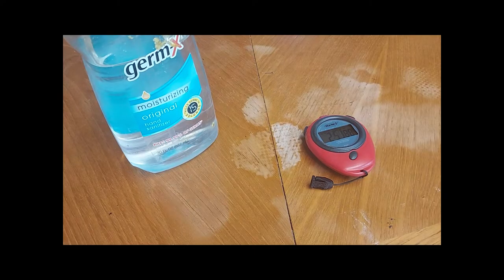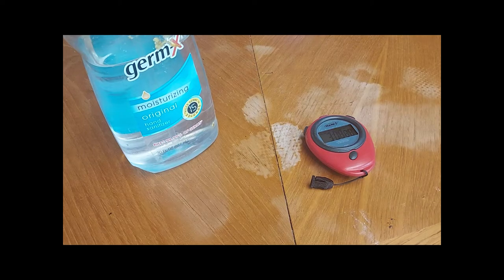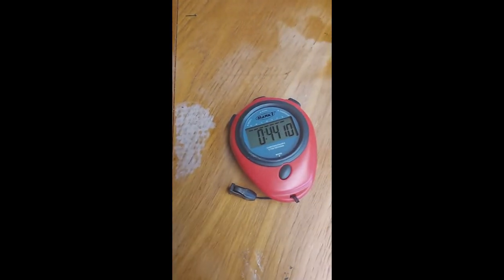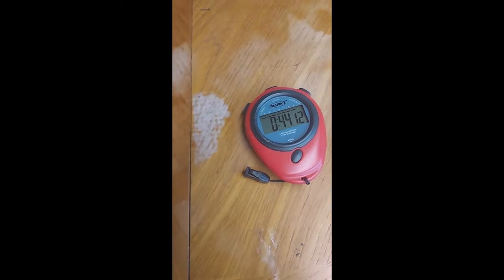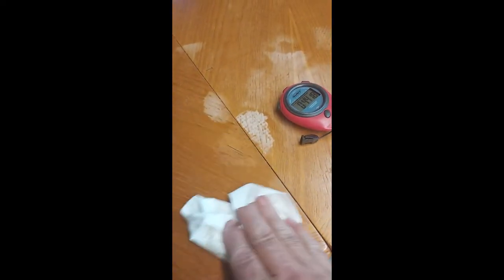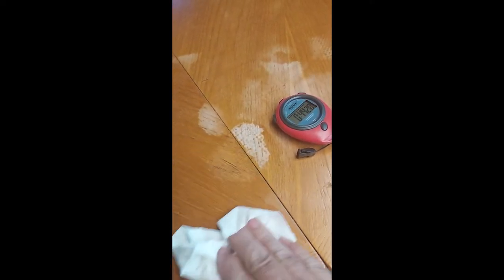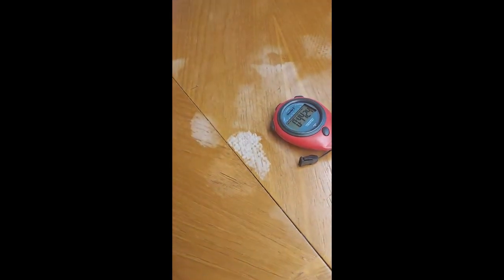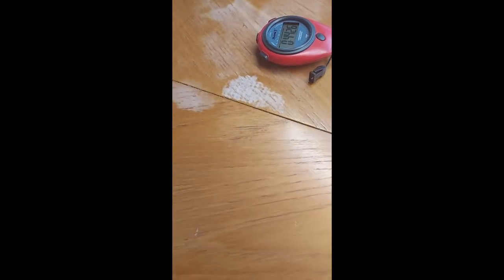I can understand where some people are finding hand sanitizer to have worked for them, but the finish needs to be soluble with alcohol, at least modestly. This table was not, and therefore it worked a little bit but didn't really get rid of the mark. It also left a little bit of a dull spot in it. So I wasn't too pleased with the effects of the hand sanitizer.